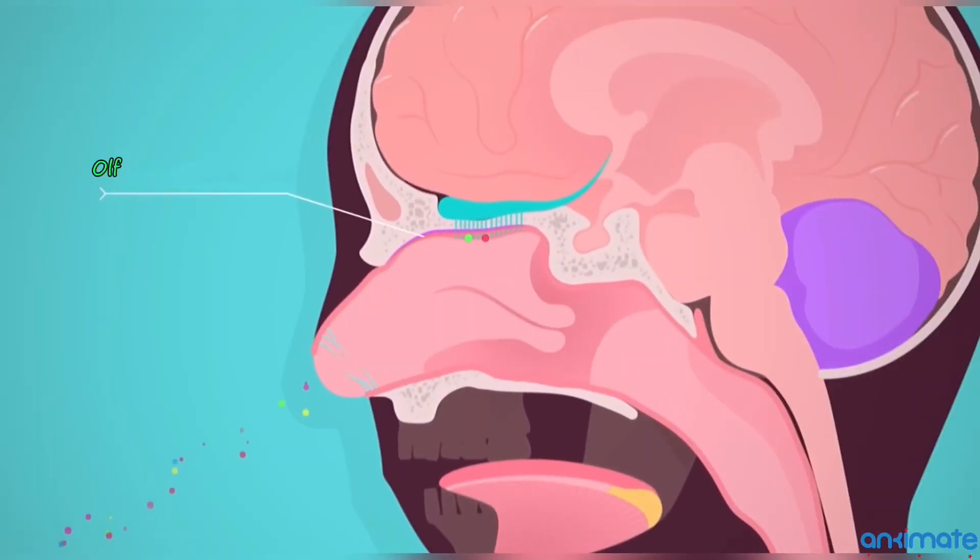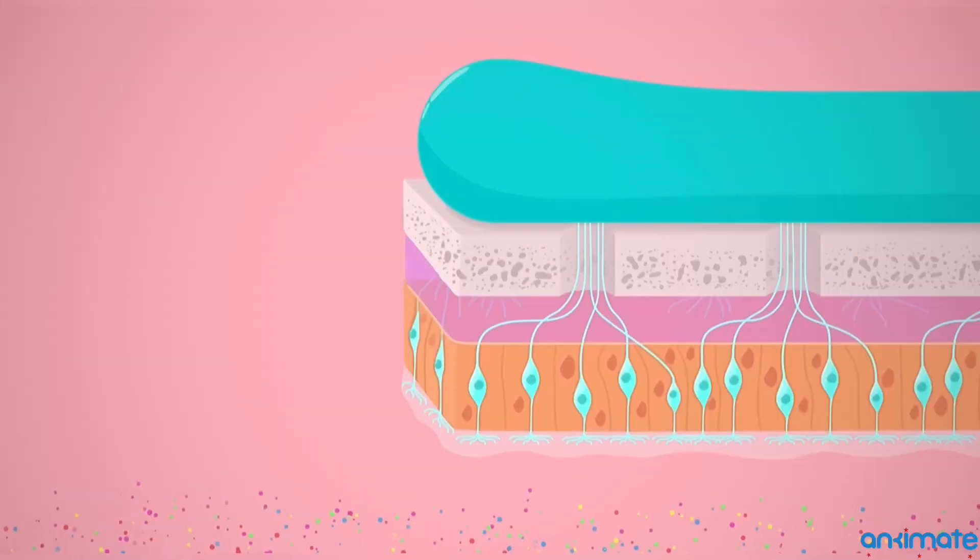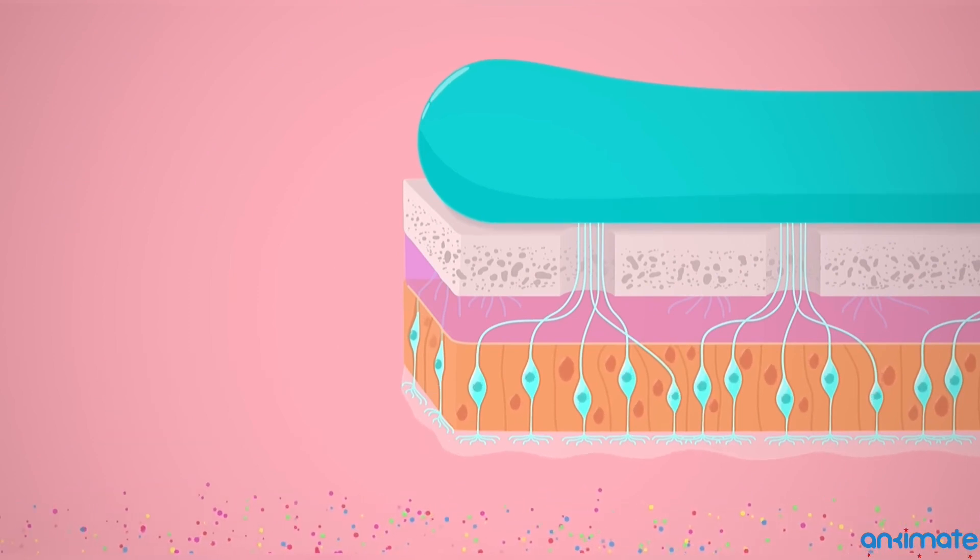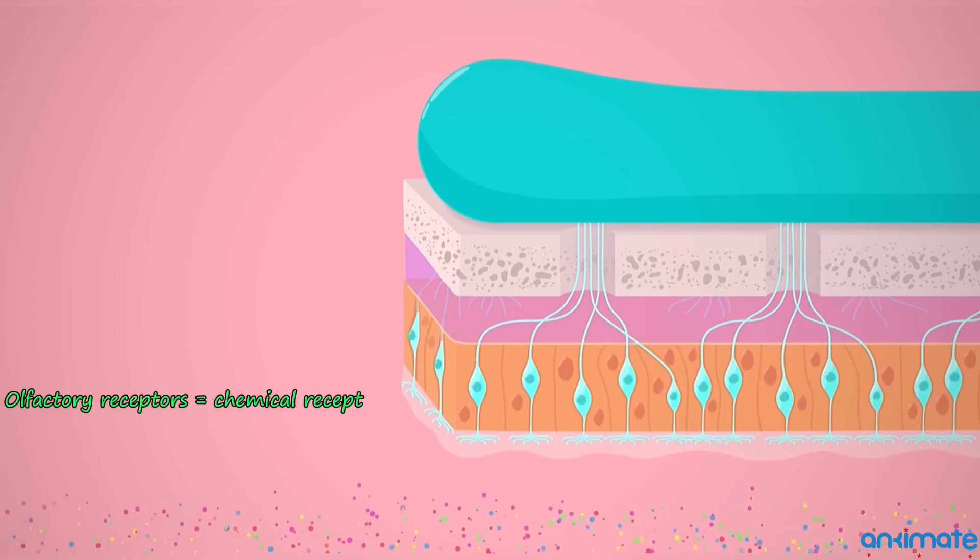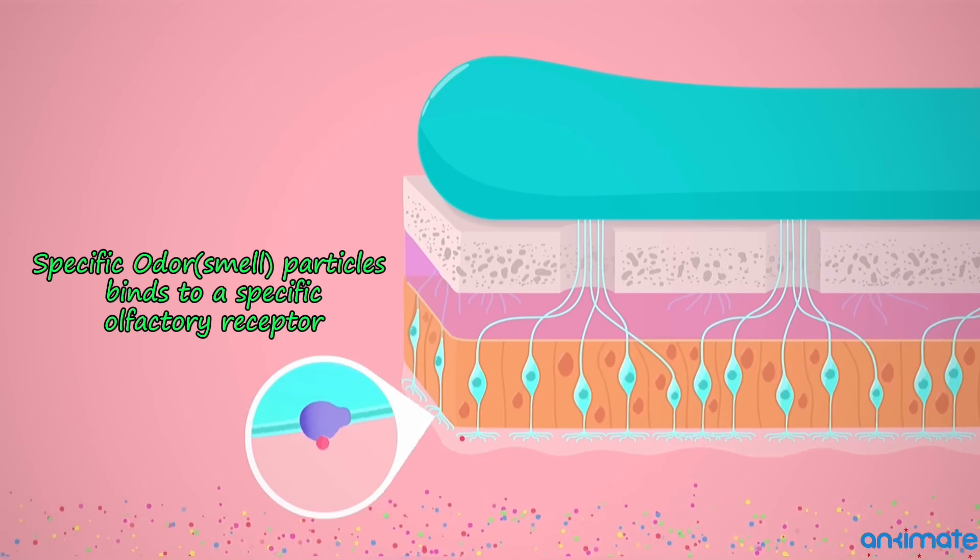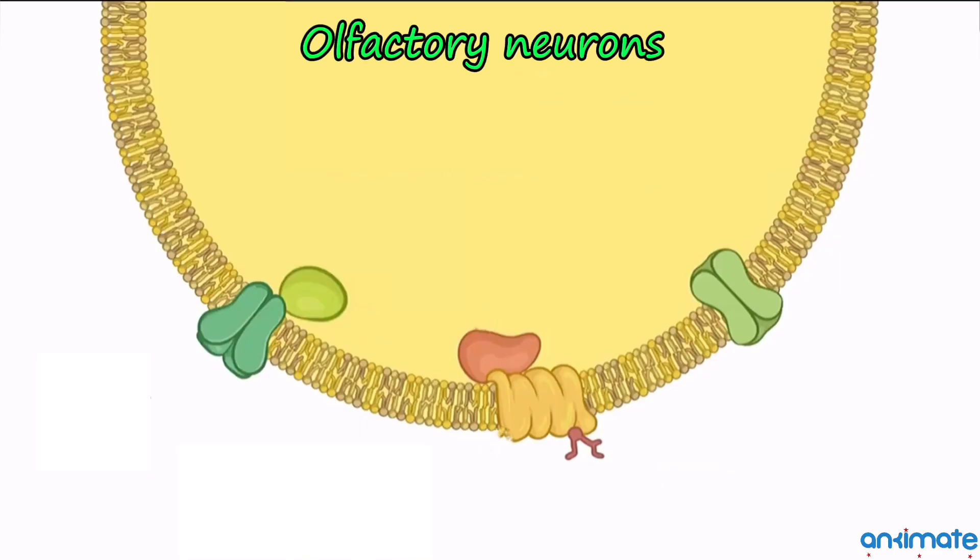Now for smell. The olfactory receptors are called olfactory sensory neurons in the epithelium of nasal passages. When odor molecules bind directly to the olfactory receptors, this activates ligand-gated ion channels, creating an olfactory receptor signal.